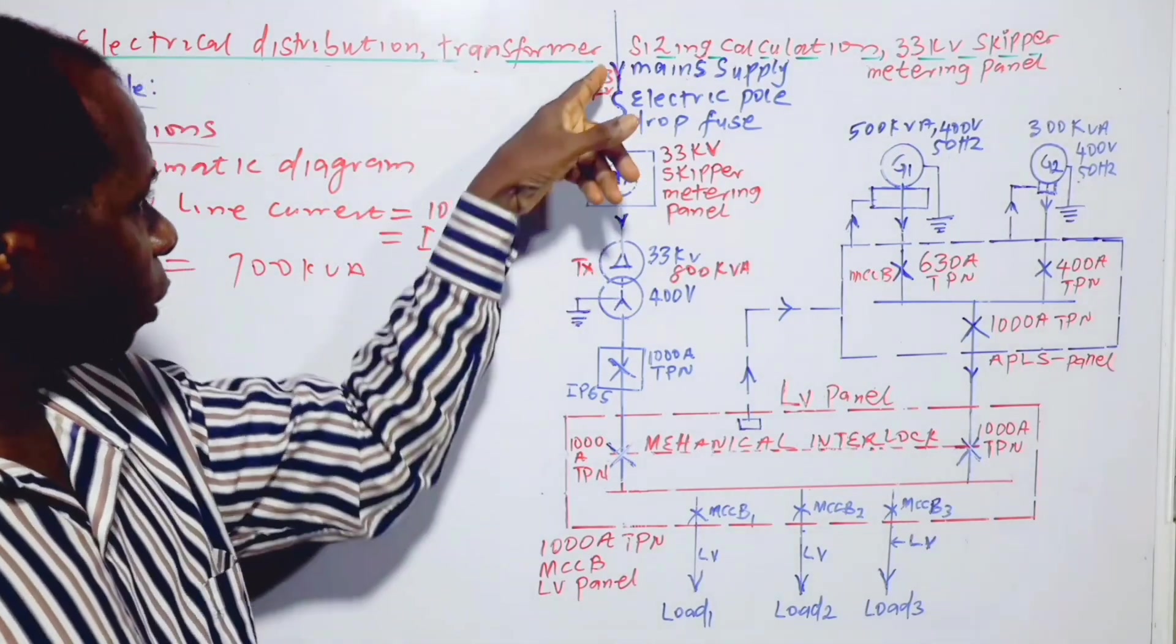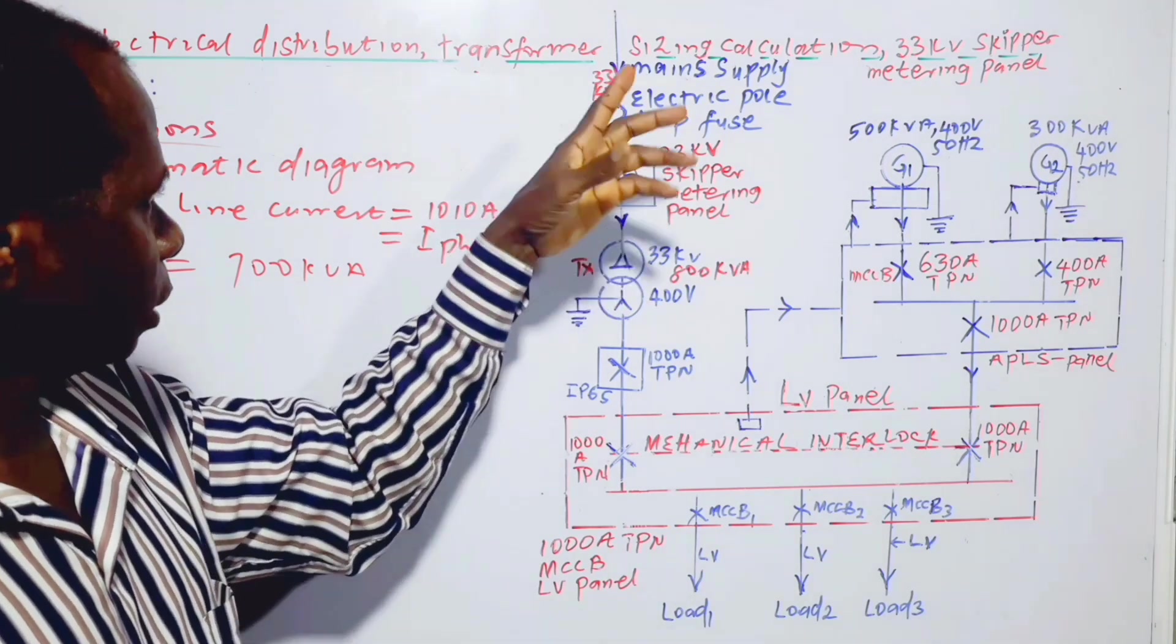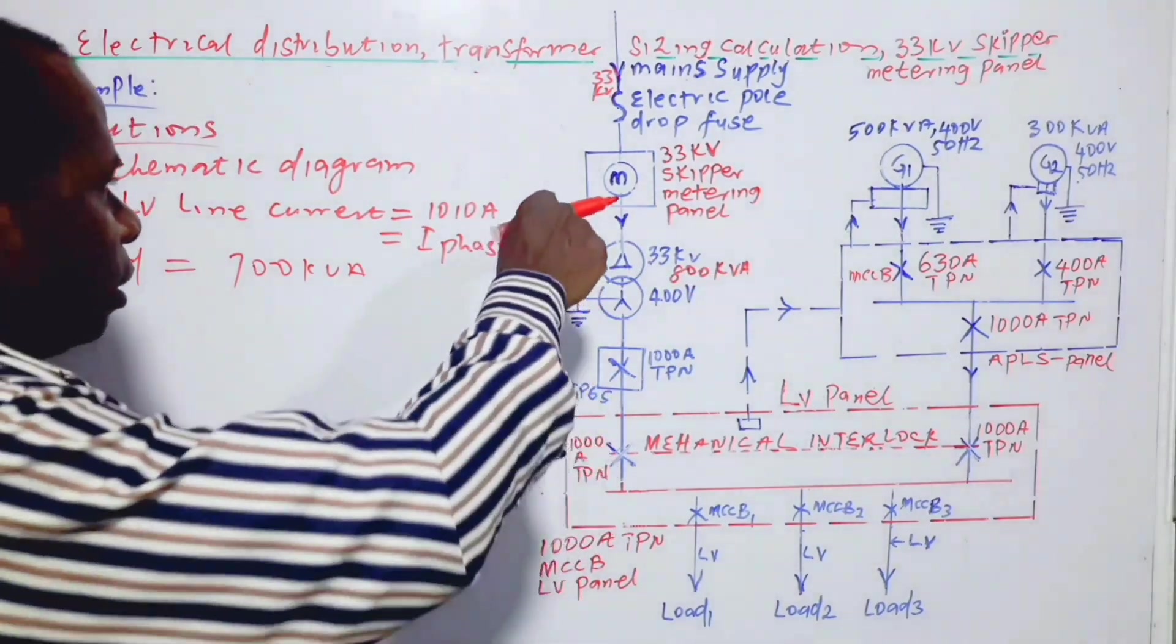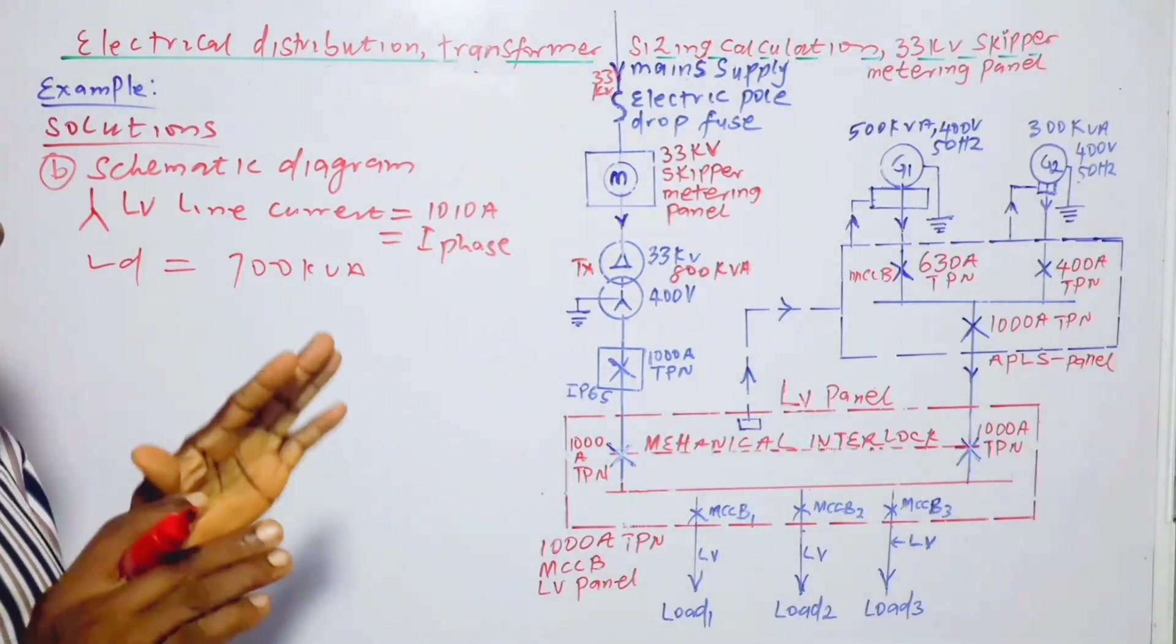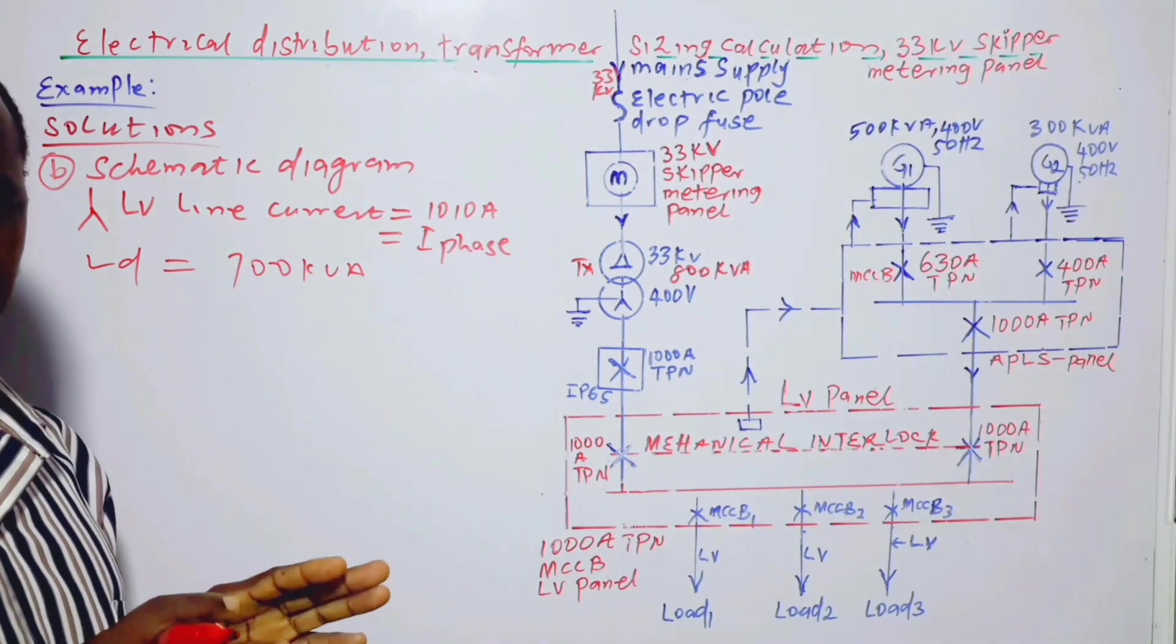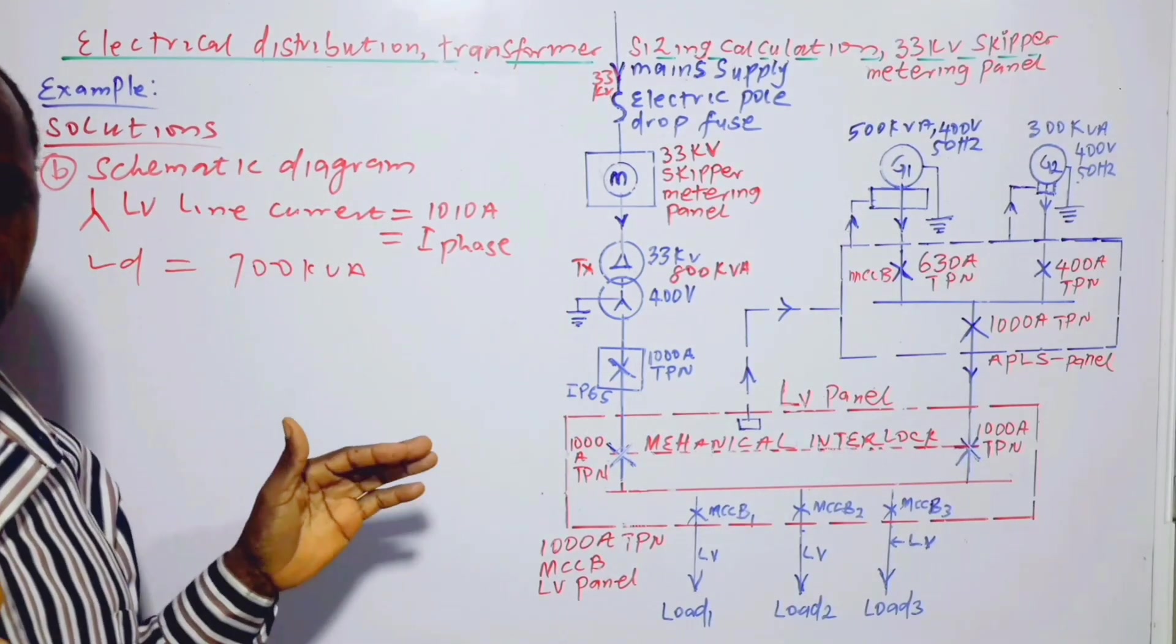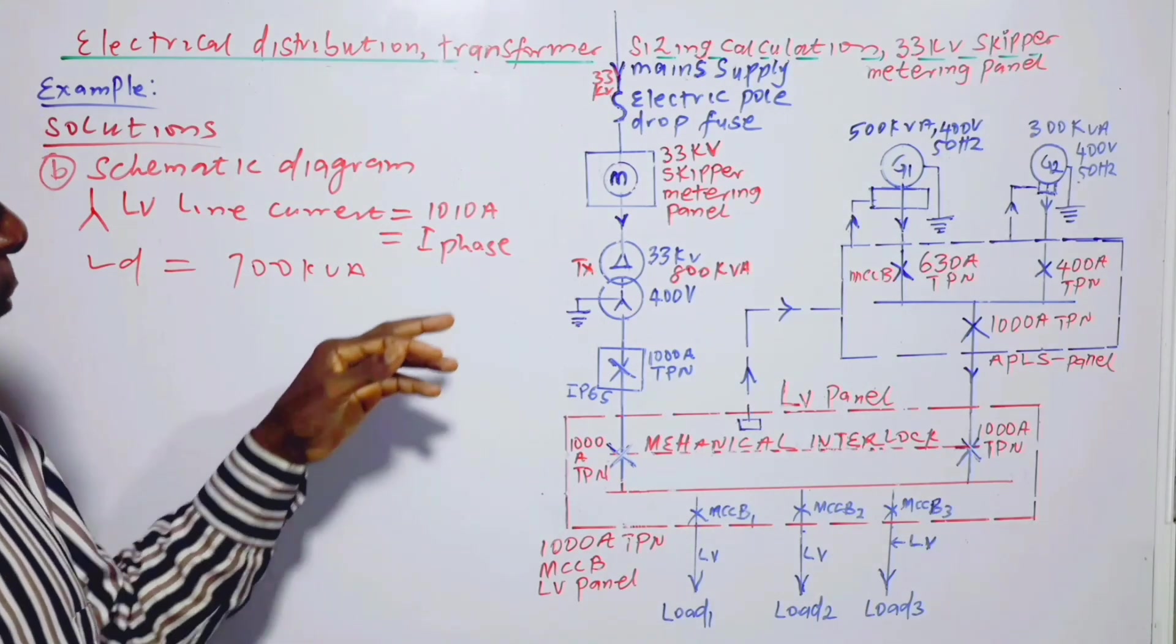And then we have the mains. We've been told that the supply is 33kV, so we have a drop fuse here on the pole, on the electric pole. So this is 33kV skipper metering panel. This is the metering panel that can be used for measuring the kilowatt hour, that is the energy meter. It can be used for metering without necessarily making use of the conventional HT or medium voltage panel.